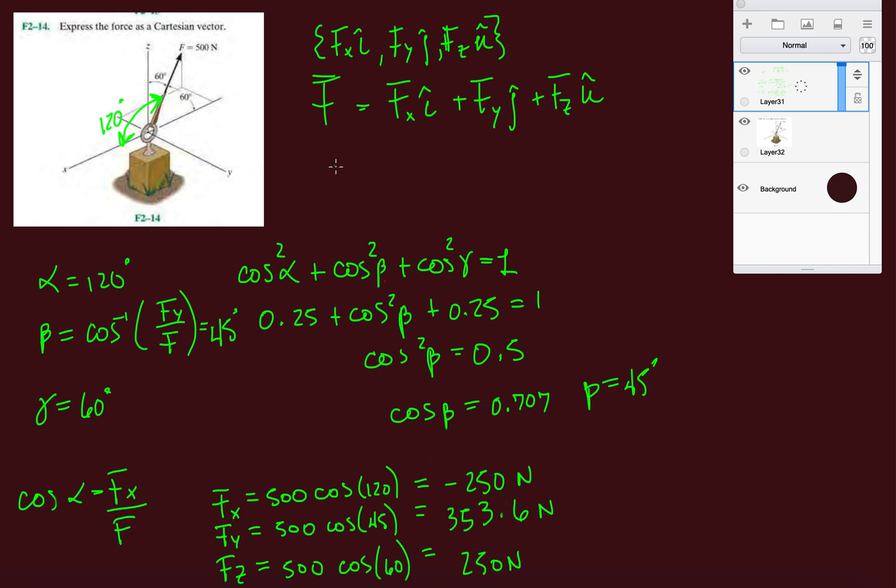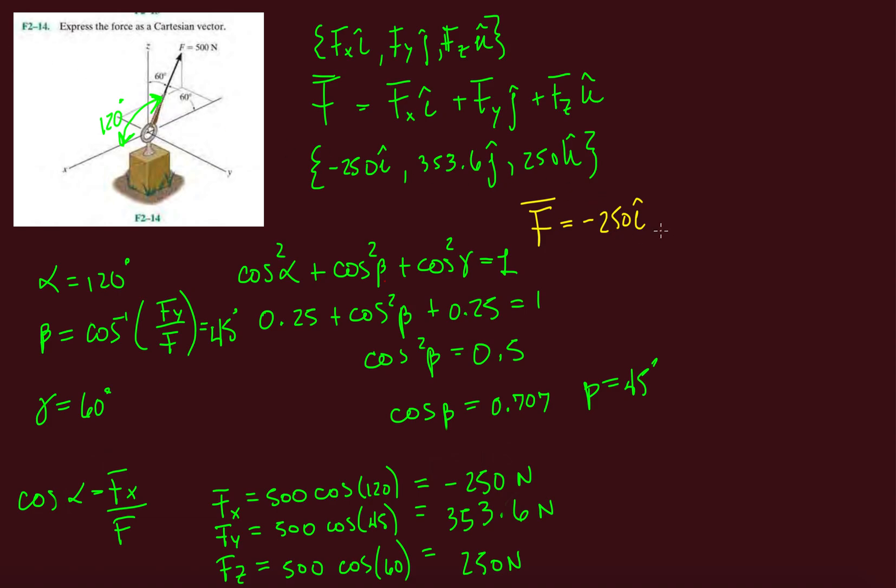Now if we want to write it in Cartesian vector format, we can write it like this: minus 250i plus 353.6j or 250k. But in my videos, I will be focusing on just writing it this way - my vector is minus 250i plus 353.6j and then 250k.